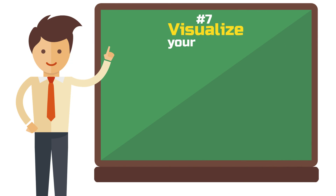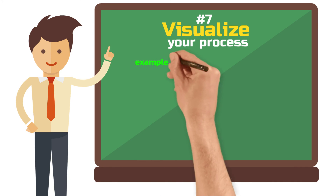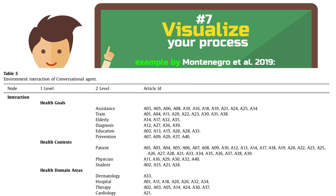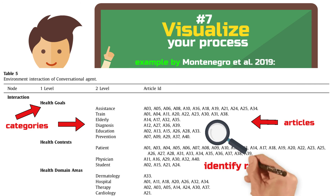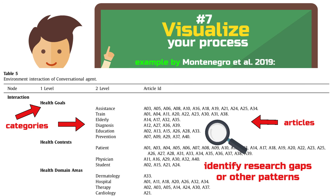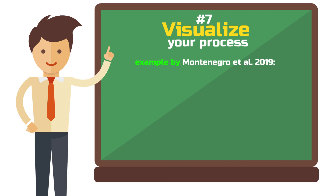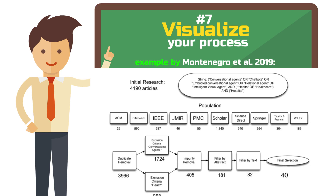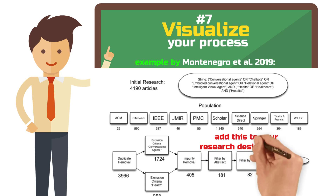Step 7: Visualize your process. In a systematic literature review, it is essential to use tables and figures extensively. In the analysis, for example, it is often helpful to create a large table of all relevant articles and create a kind of metrics, where you can graphically represent which aspects or results are present or not in each article. This way you can identify areas that have not been sufficiently researched or recognize other patterns that can serve as the result of your review. It also helps to create a graphical representation of your search process, for example with a flowchart, which you can position in the section describing your research design.